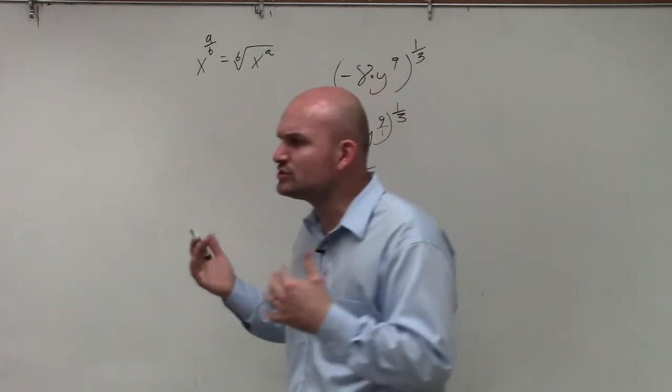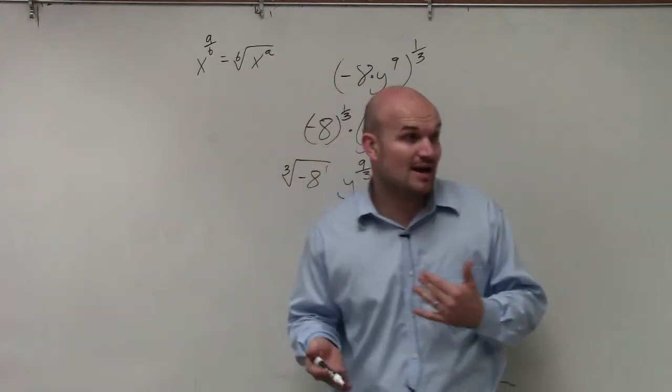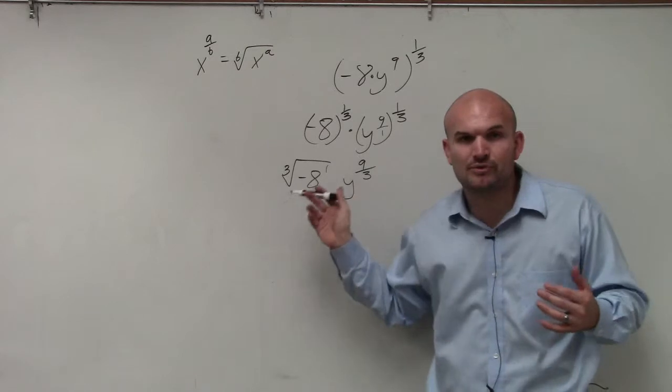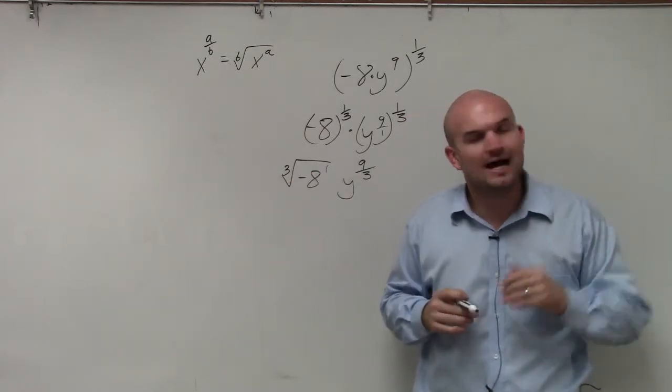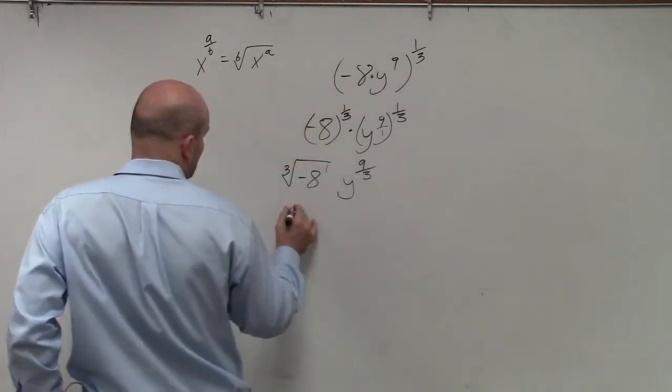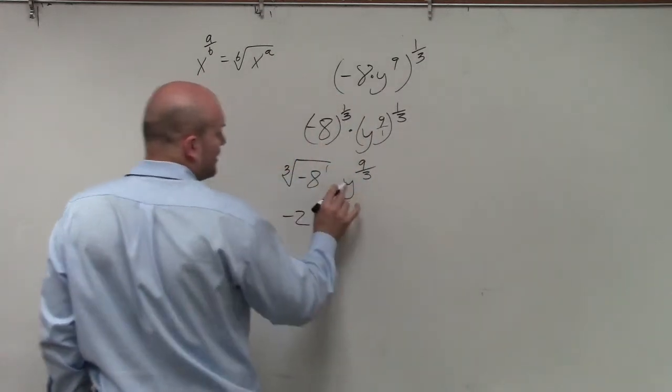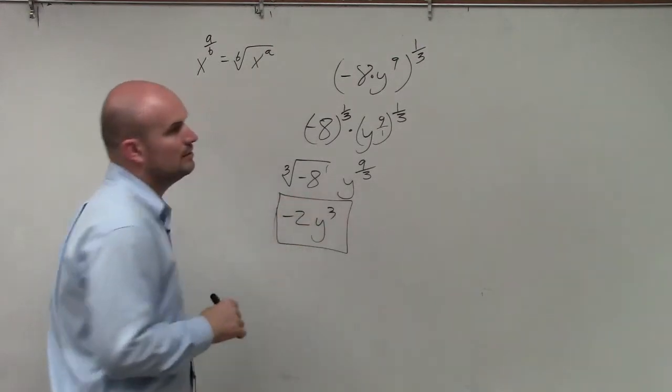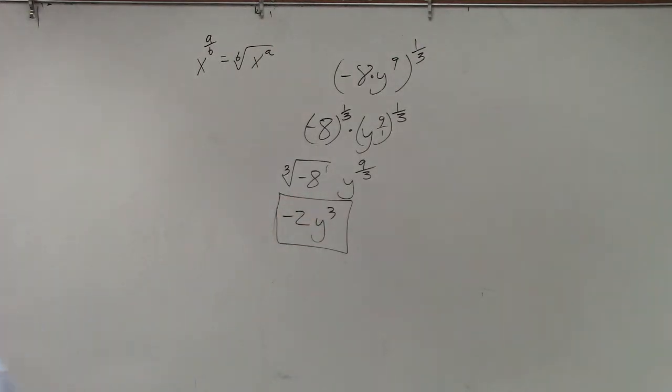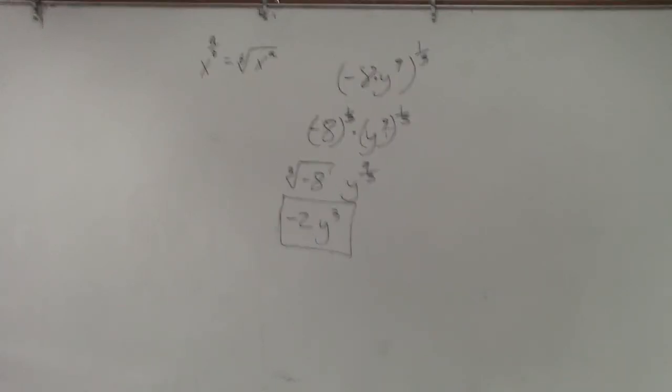But I thought you couldn't take the square root of a negative number. That's right. We're not taking the square root. We're taking the cube root. When you have an odd root, you can take the odd root of negative numbers. So therefore, this becomes negative 2. And then 9 divided by 3 is just going to be 3. Done. So we can't take the square root of a negative number.